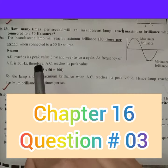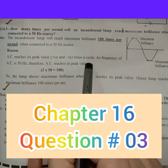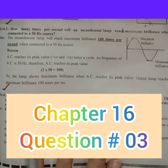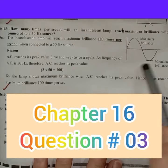AC reaches the peak value twice in a cycle. So frequency is 50 Hz. This means that it will show maximum brilliance.